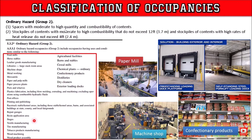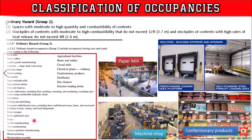Ordinary hazard group 1 is a space with moderate quantity and low combustibility of contents, with moderate rates of heat release. Ordinary hazard group 2 is a space with moderate to high quantity and combustibility of contents — stockpiles of content with low to moderate combustibility that do not exceed 8 feet (2.4 meters) in height, with moderate rates of heat release expected.